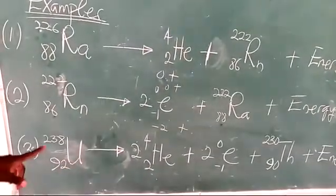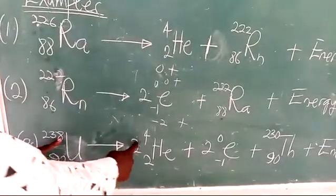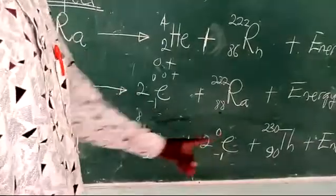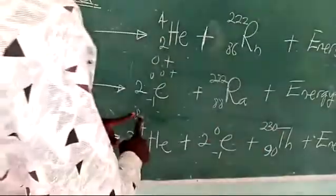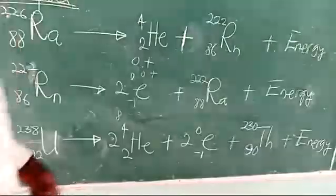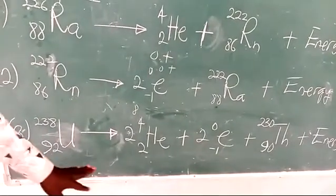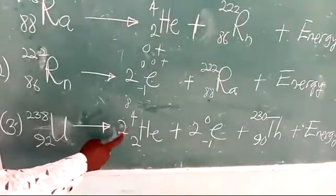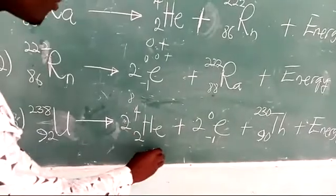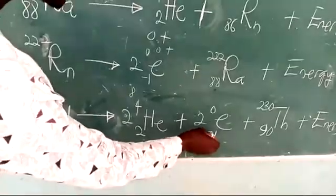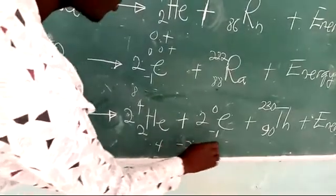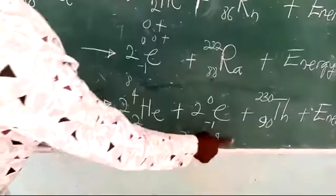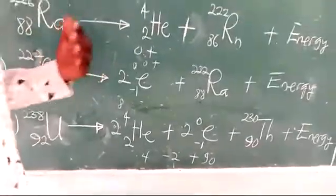The third process: we have 238 here, so the total mass on the right should give us that. Now 2 times 4 is 8, and 2 times 0 is 0, and then we have a mass of 230. So 8 plus 0 plus 230 will be 238, which is equal to what we have on the left-hand side. The atomic numbers: this is 92 here. We have 2 alpha particles: 2 times 2 is 4, plus 2 times minus 1 which is minus 2, plus 90 here. So 4 minus 2 will be 2 and then 2 plus 90 gives you 92. This is all about natural radioactivity — it occurs spontaneously and naturally without human effort or interference.